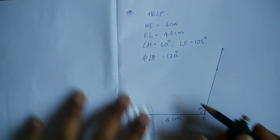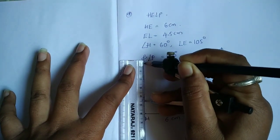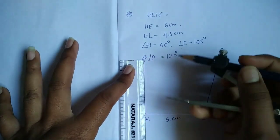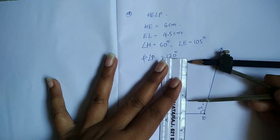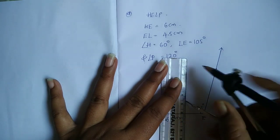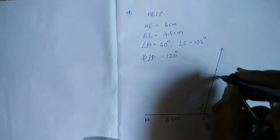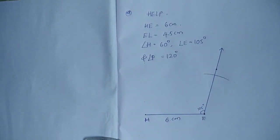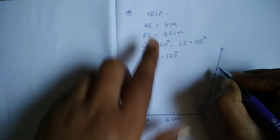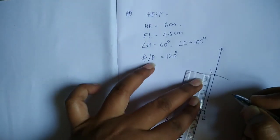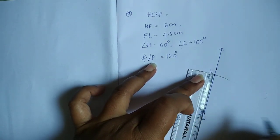EL is 4.5 centimeters, so we use the compass set to 4.5 centimeters. We draw one arc. Now let's check the measurements — 0 to 4.5 centimeters. Okay, now we draw L. The intersecting point is equal to L. Let's check — this is 4.5 centimeters.